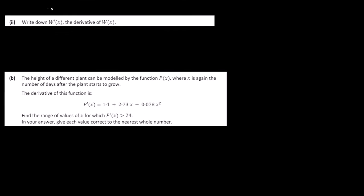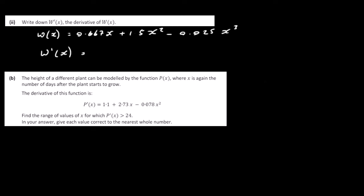Now write down W prime of X, the derivative of W of X. W of X was 0.667X plus 1.5X squared minus 0.025X cubed. Differentiating with respect to X: the first term becomes 0.667, the second term gives 2 times 1.5 which is 3X, and the third term gives 0.075X squared. So W prime of X equals 0.667 plus 3X minus 0.075X squared.